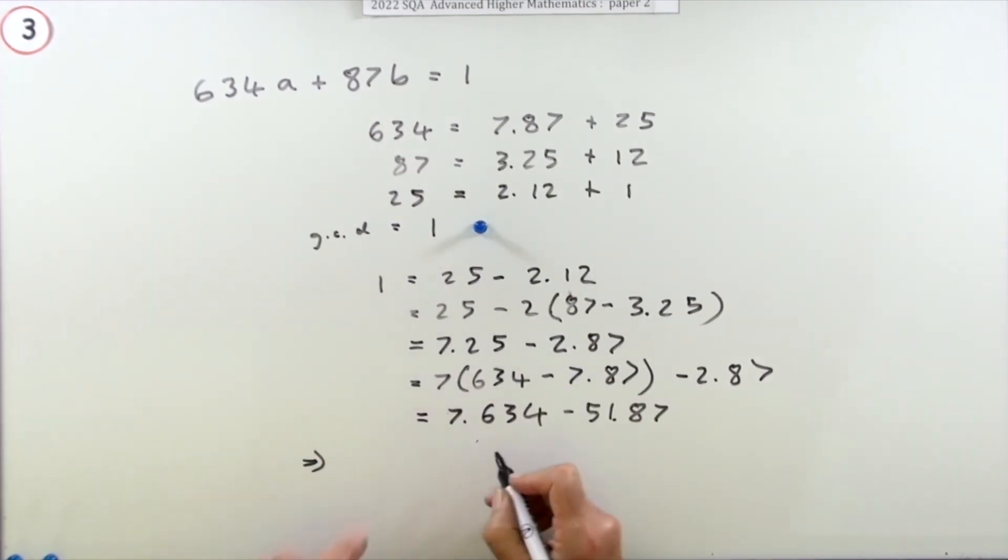So explicitly state them: a would be 7 and b would be negative 51.